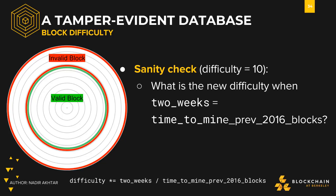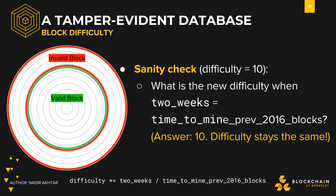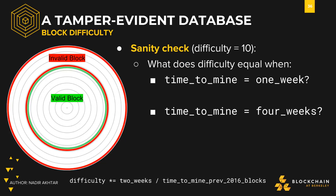A quick sanity check to see if your understanding is correct. Let's say that the current difficulty is 10. Then what's the new difficulty if the time to mine 2016 blocks is exactly two weeks? Yep, it's still 10. The puzzle was precisely as hard as we wanted, so the difficulty stays exactly the same. What about when the time to mine those 2016 blocks is just one week? If the time to mine is one week, then the difficulty is 20. We mine those blocks in half the expected time, meaning that the puzzle was half as hard as necessary, so we make it twice as difficult.